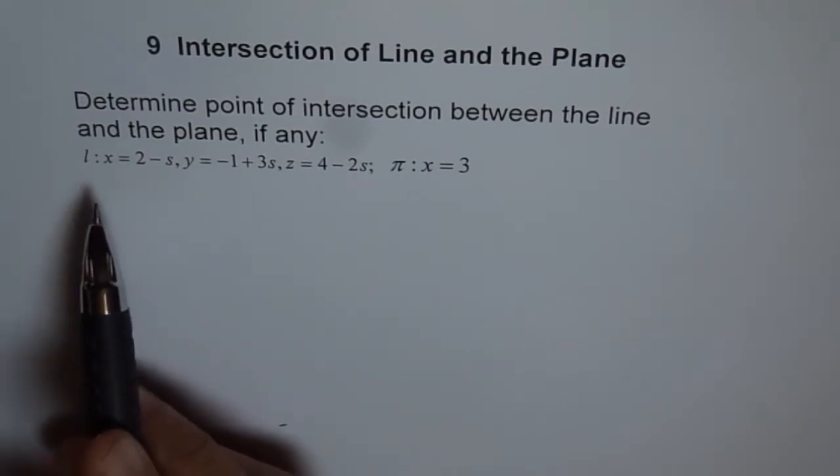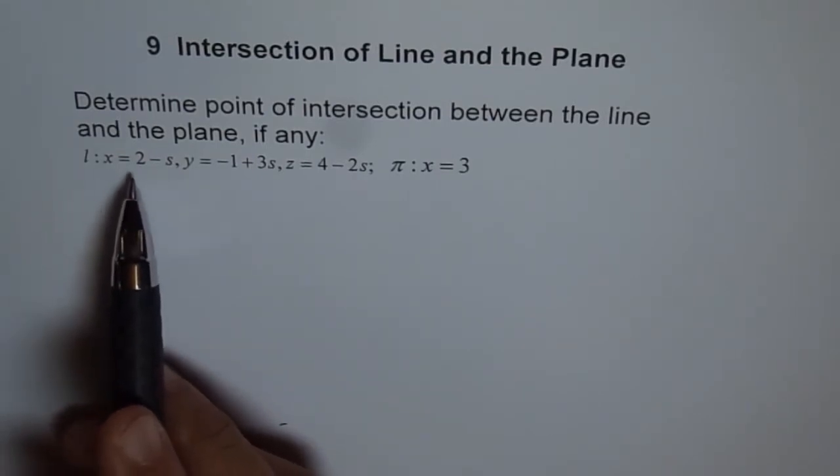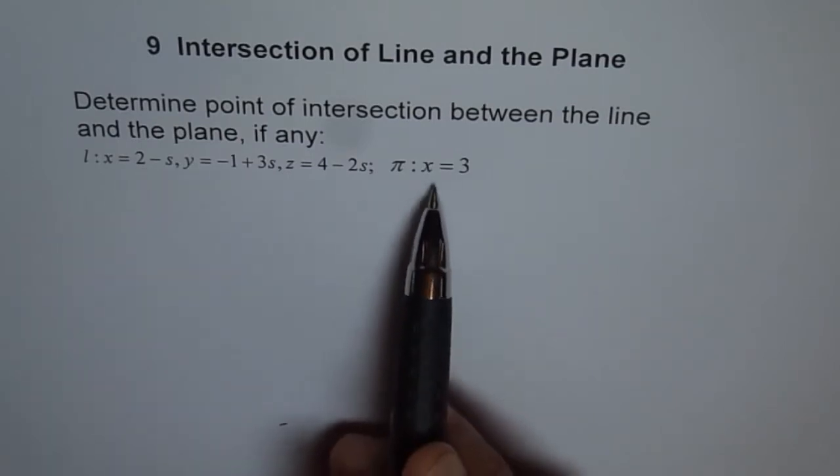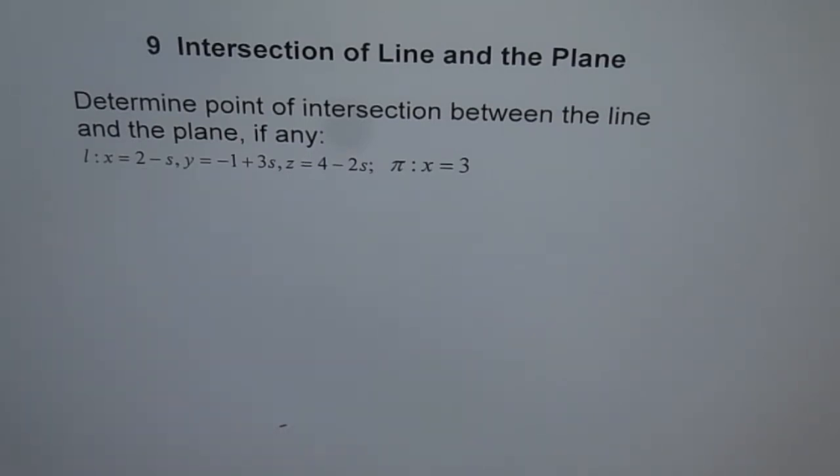What we can do is find what x is - x is 2 minus s - and we can plug this value into the plane equation, and then get the value of s. That's the only possibility.